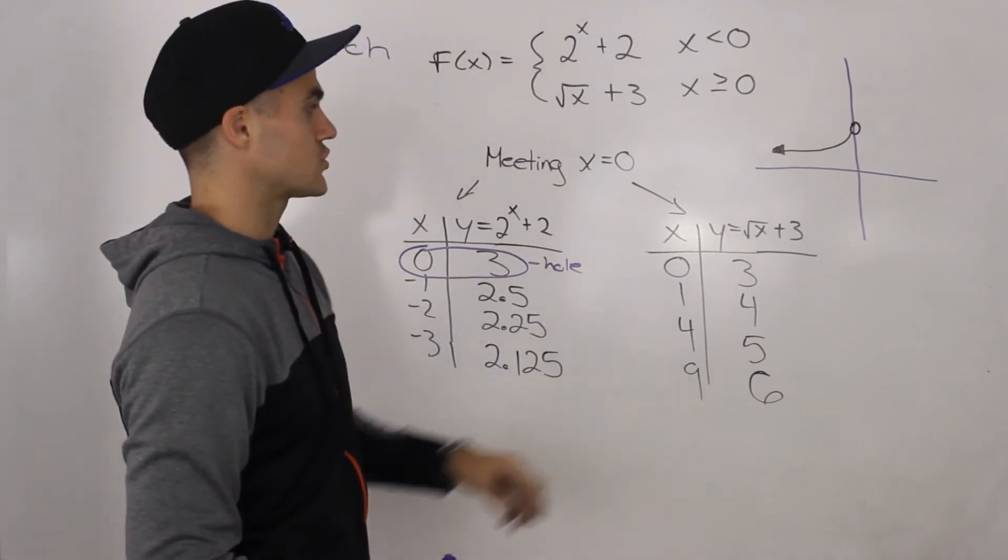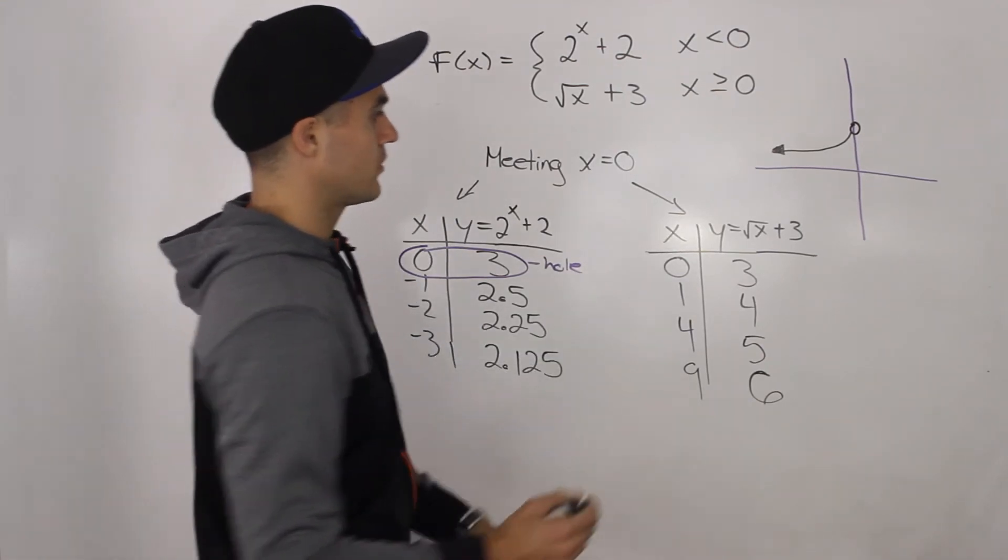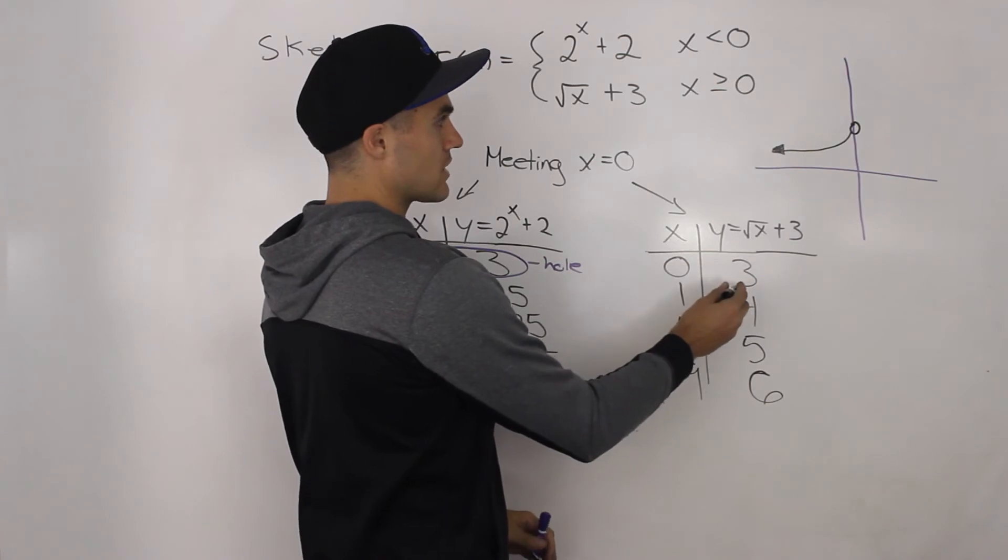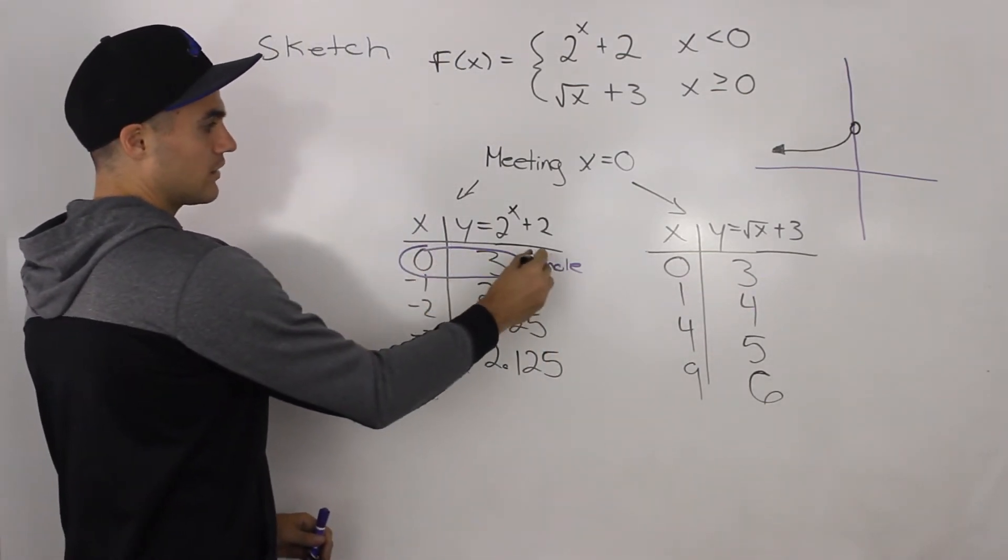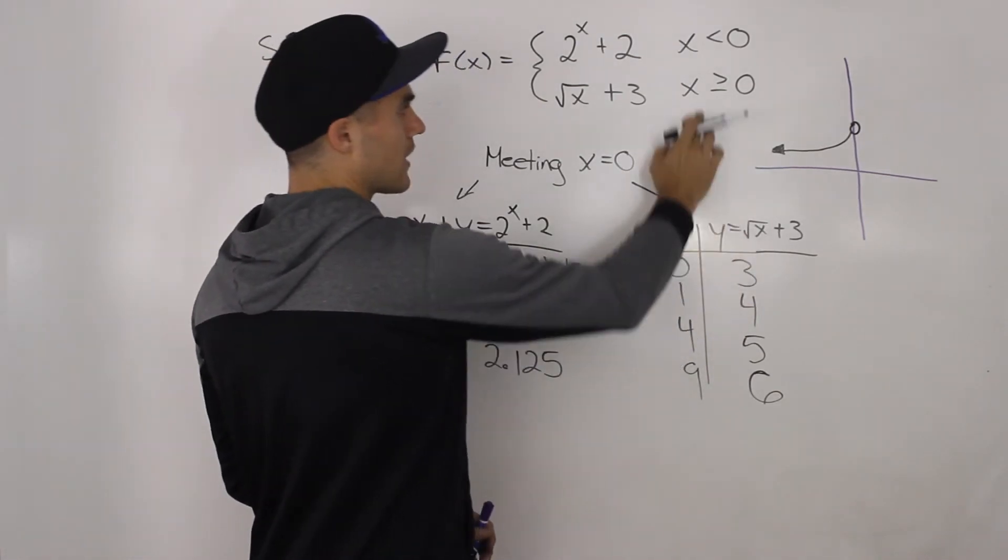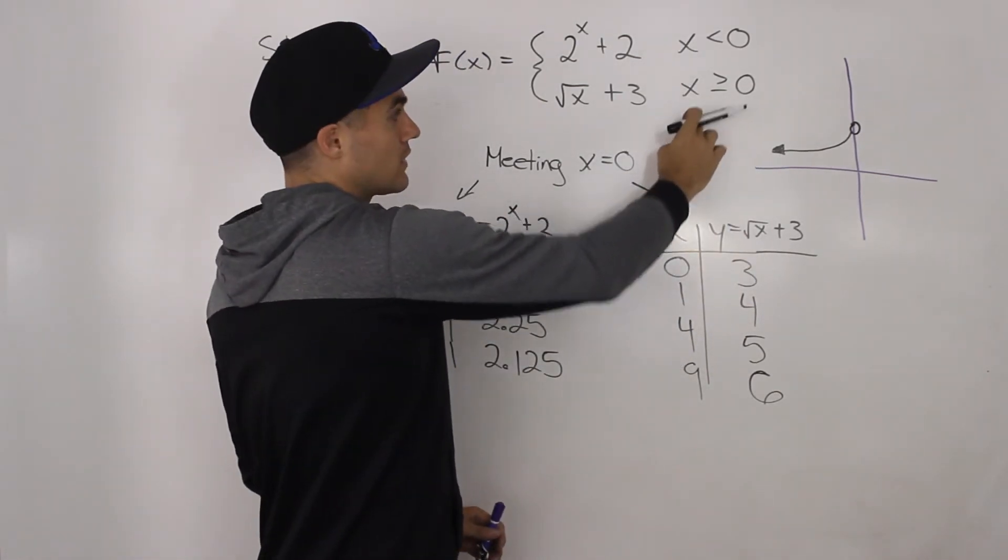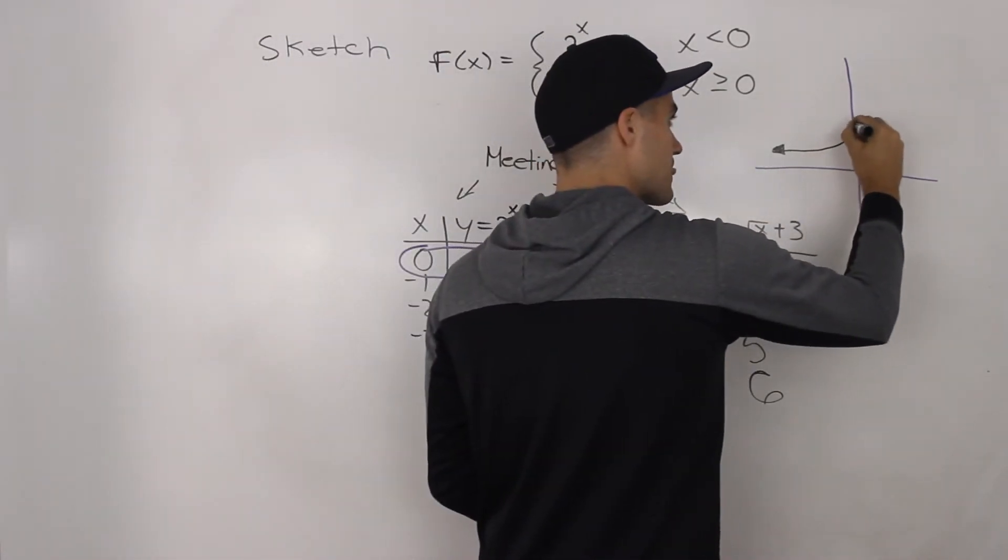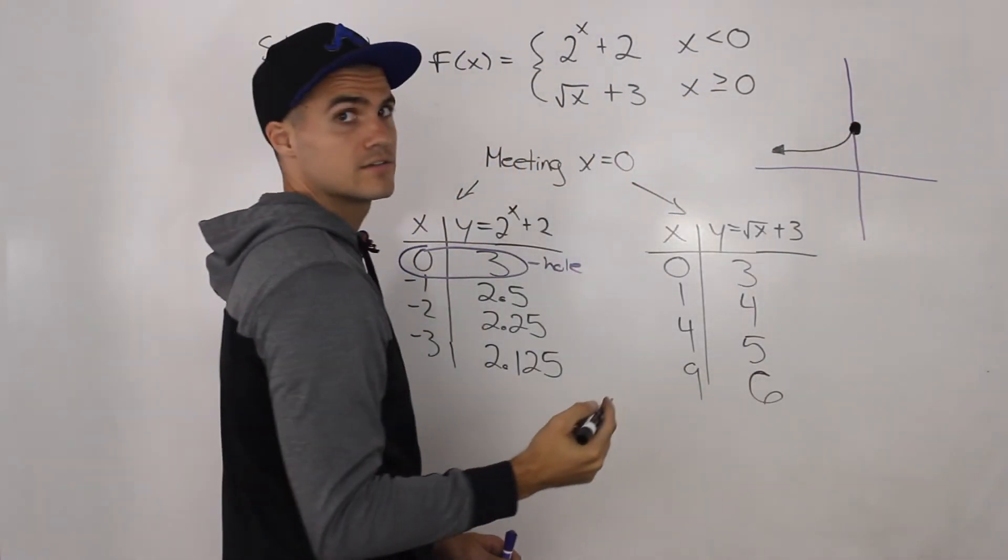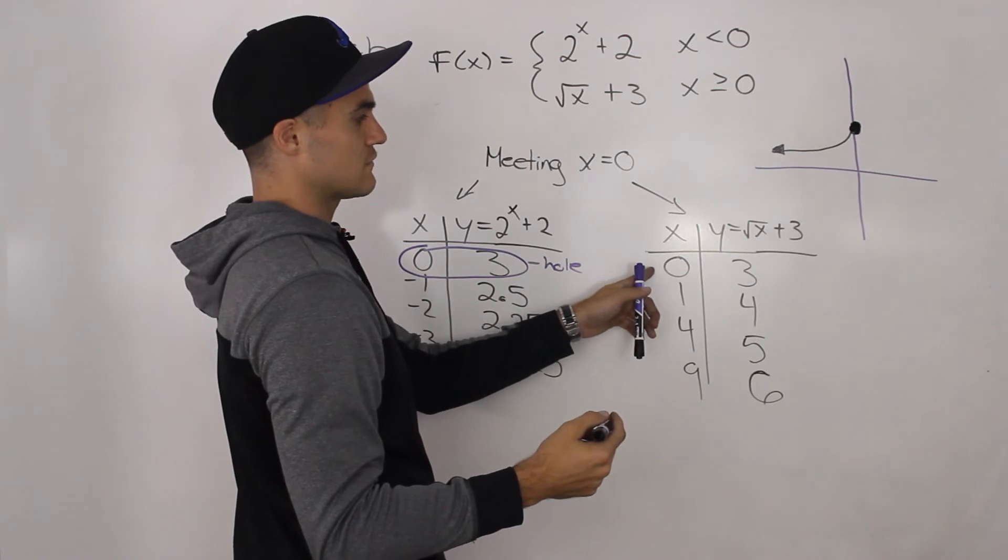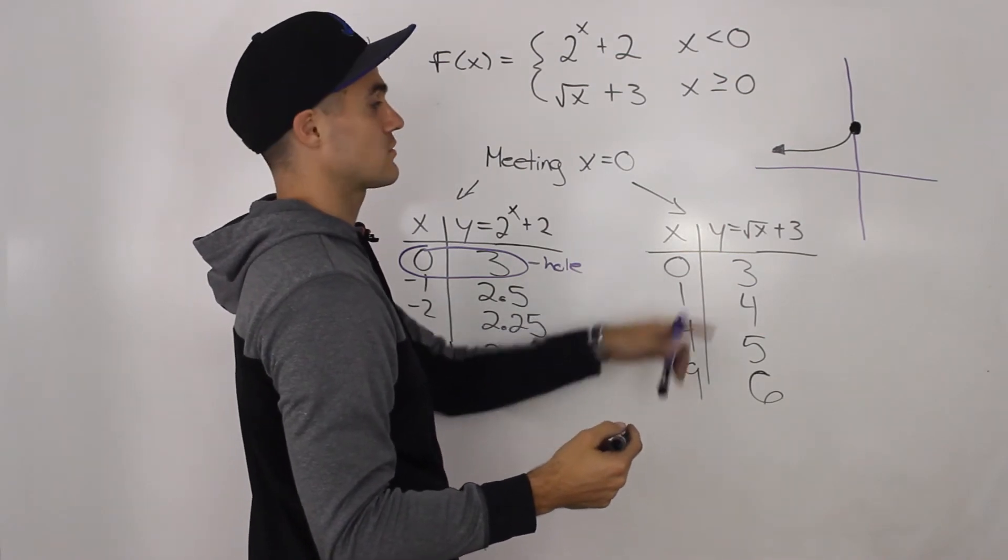Now, what about the right portion? Well, if we plot these points, notice how zero and three is the same coordinate as zero and three here. Well, here it was a hole, but here it's defined, because here x is greater than or equal to zero. So this is actually going to be a solid dot, just because the function is defined here at zero and three.